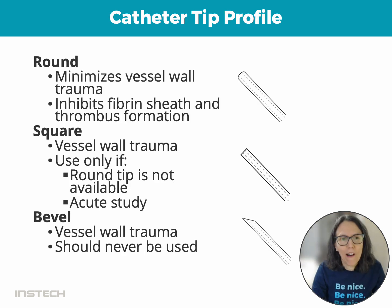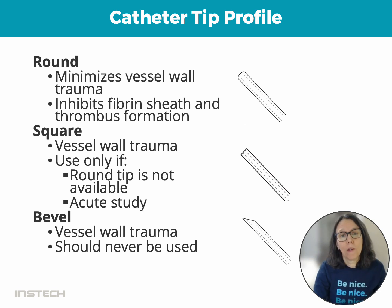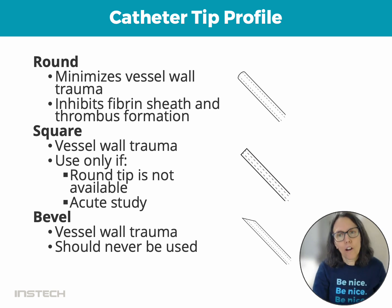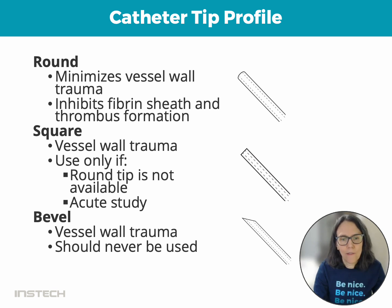Now the different tip profiles — we have three: round, square, and bevel. Any time you can use a round-tip catheter, that's what should be used if you're looking for long-term patency. The round tip minimizes vessel wall trauma as the catheter is advanced, thereby inhibiting fibrin sheet and blood clot formation. If you cannot use a round tip, then go with a square tip. A bevel tip should never be used when placing a catheter in the vascular system.